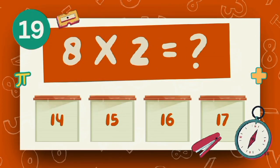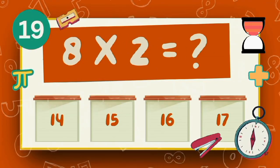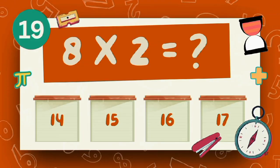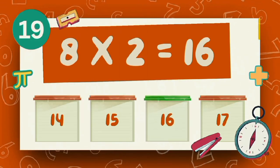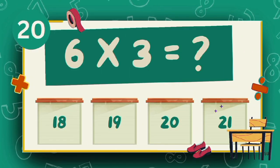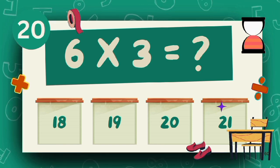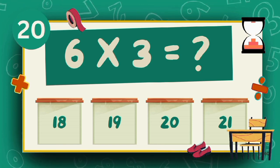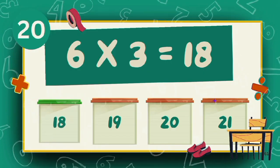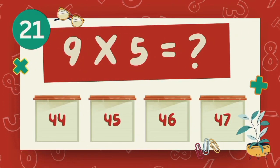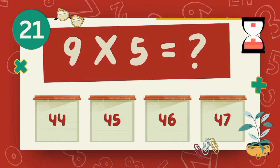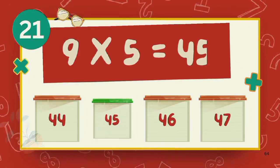What does 8 multiply 2? The answer is 16. What does 6 multiply 3? The answer is 18. What does 9 multiply 5? The answer is 45.